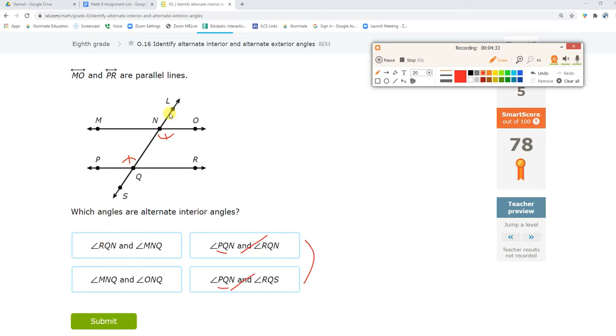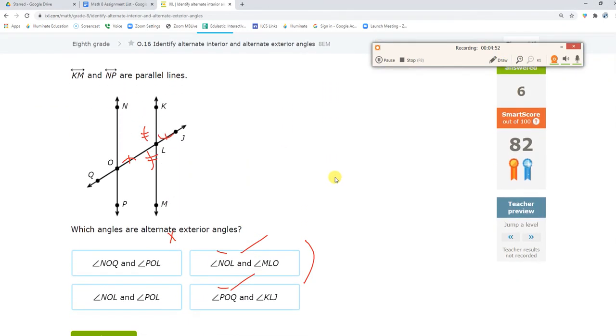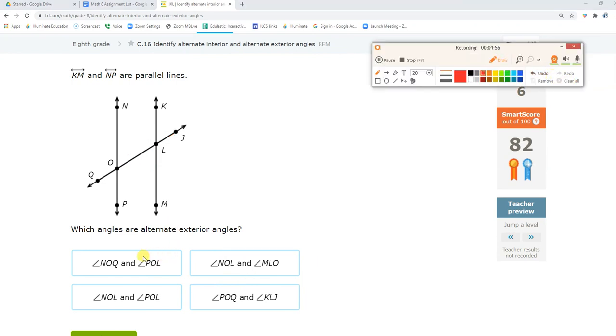Angle RQN. This one, his alternate interior would be over here, which would be angle MNQ. There it is. Alternate interiors.